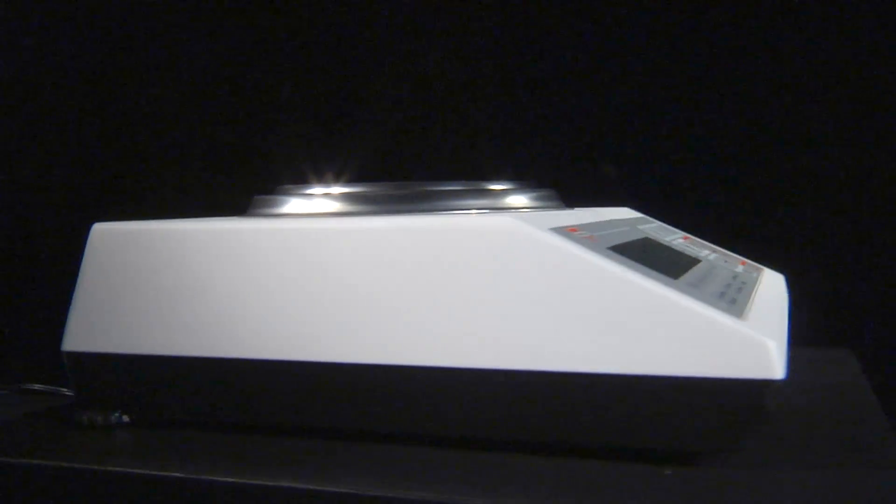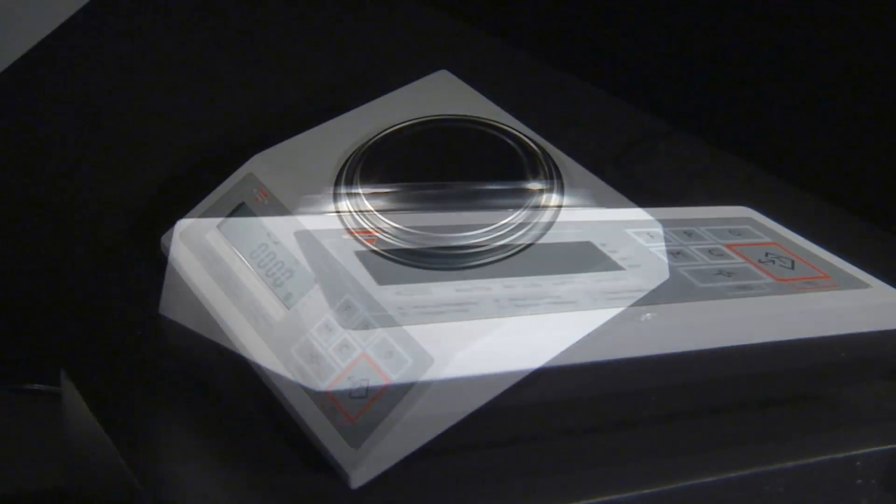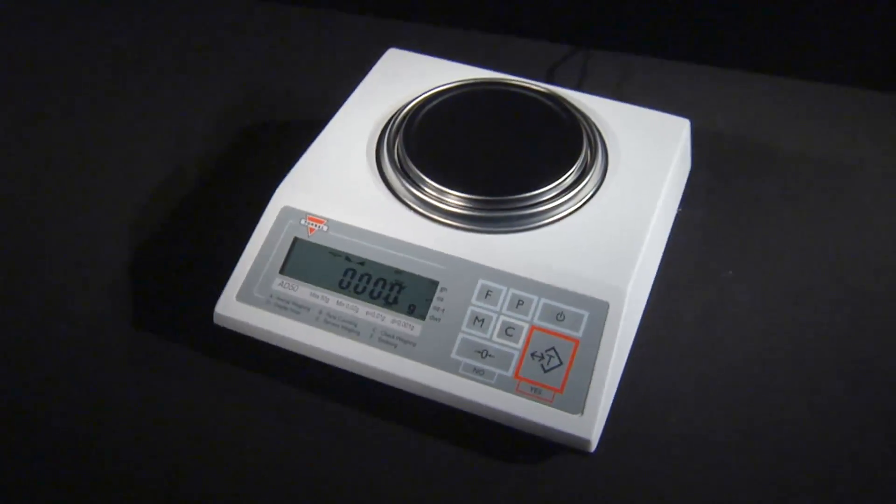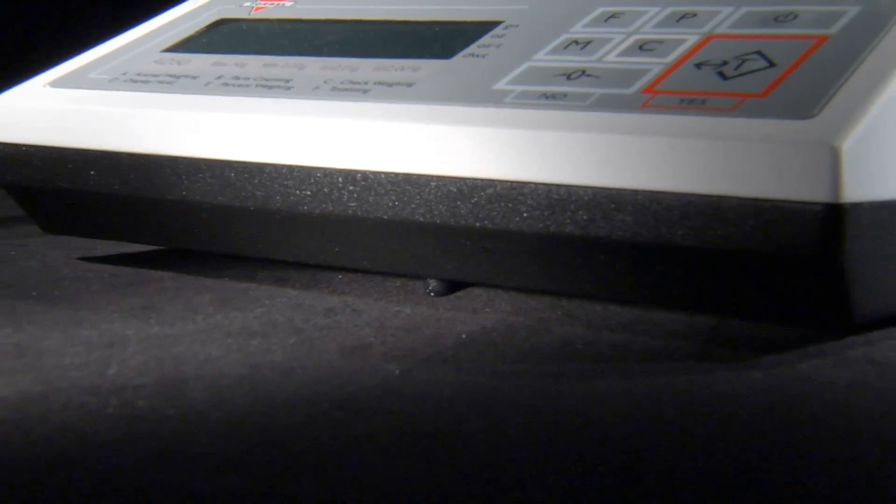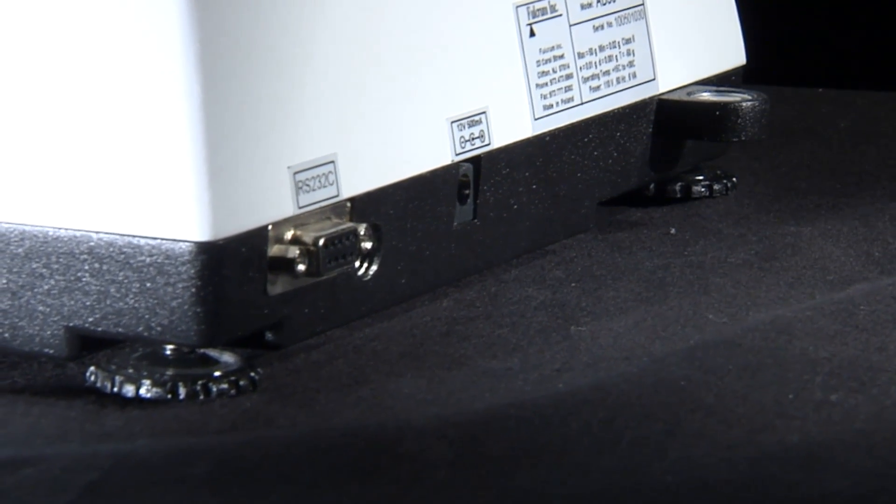All AD scales are built with a full die cast metal housing that guarantees durability and long operating life. The base uses a tripod support system that consists of one fixed leg and two adjustable legs located in the rear.